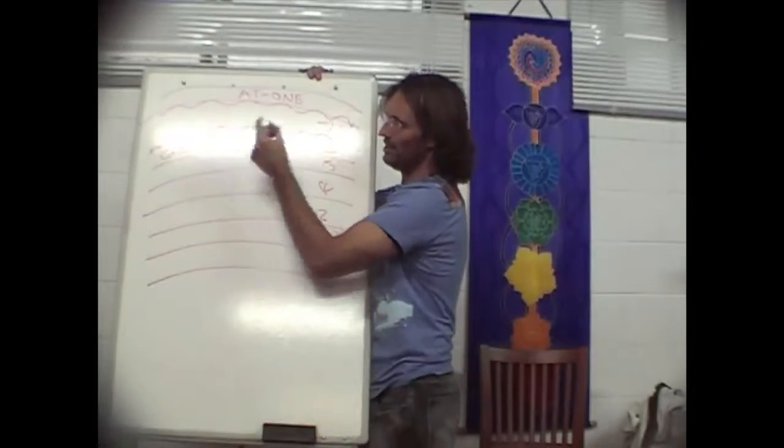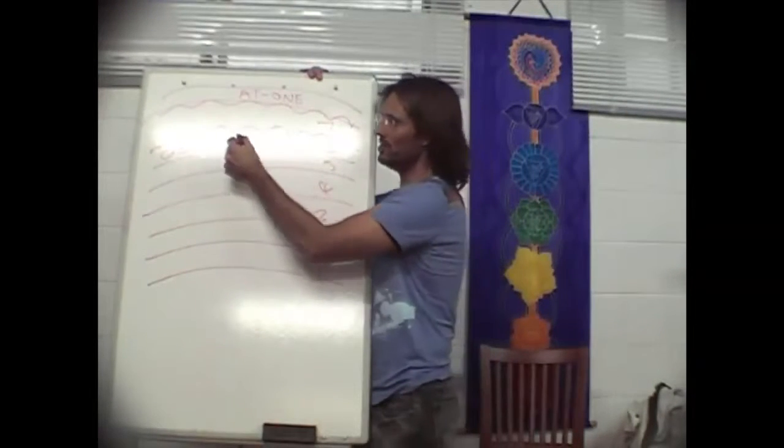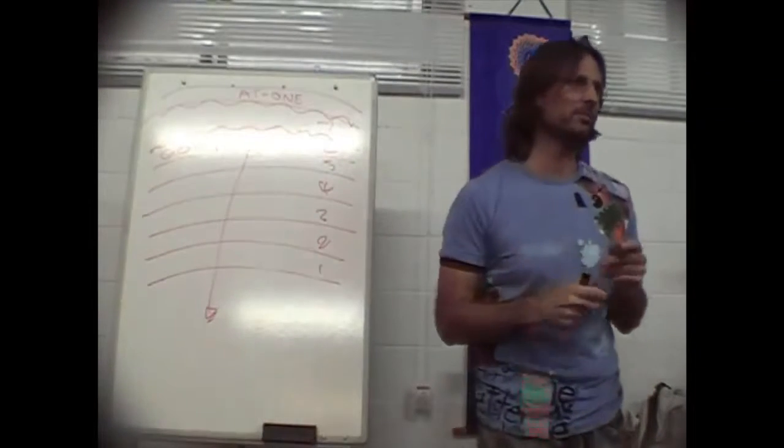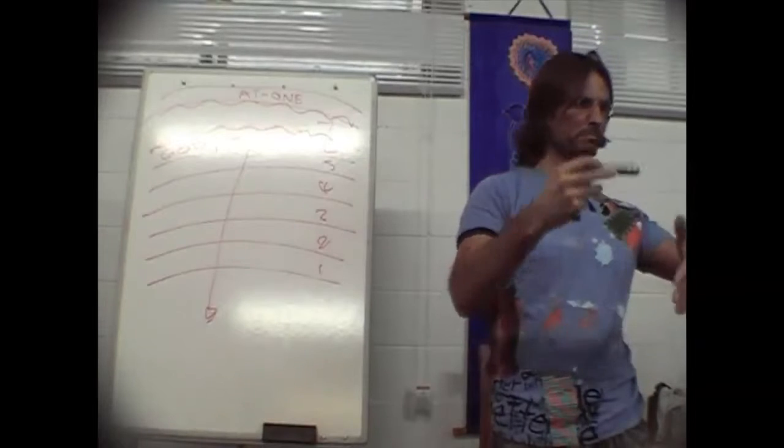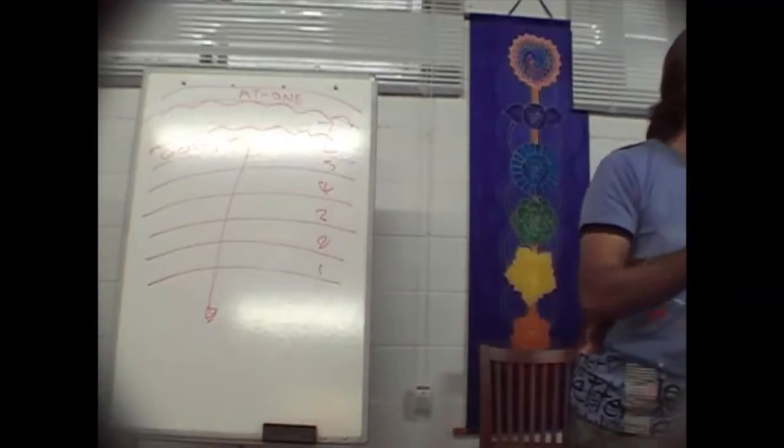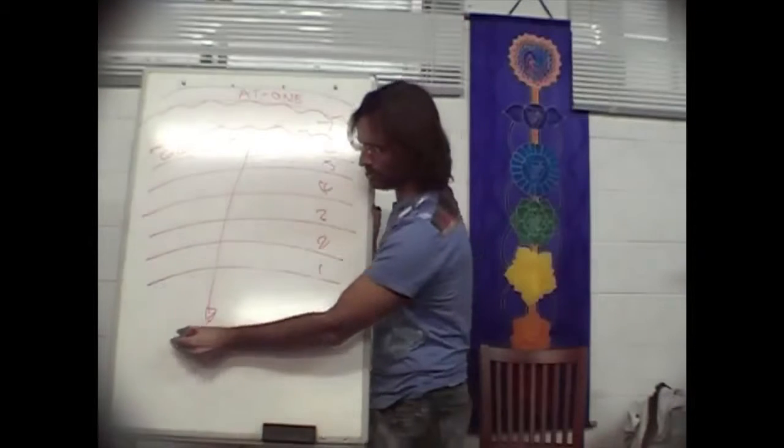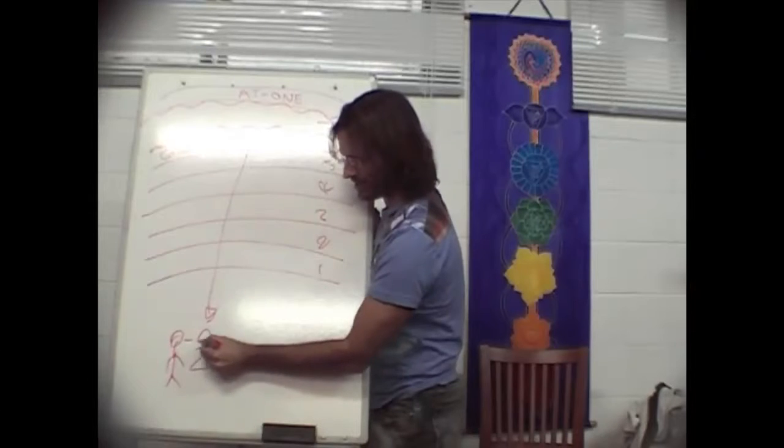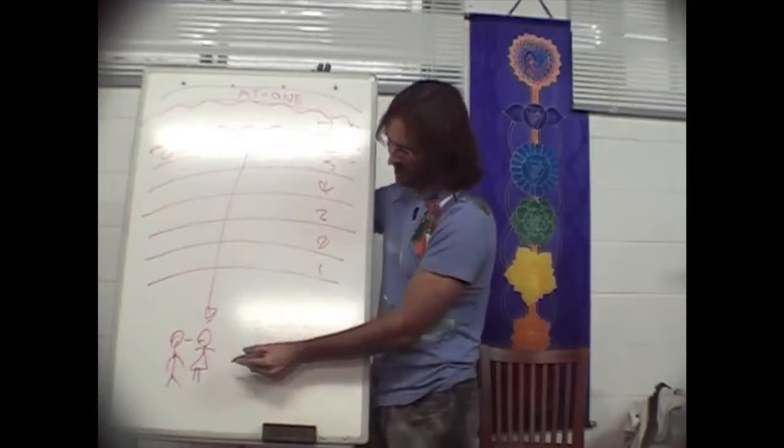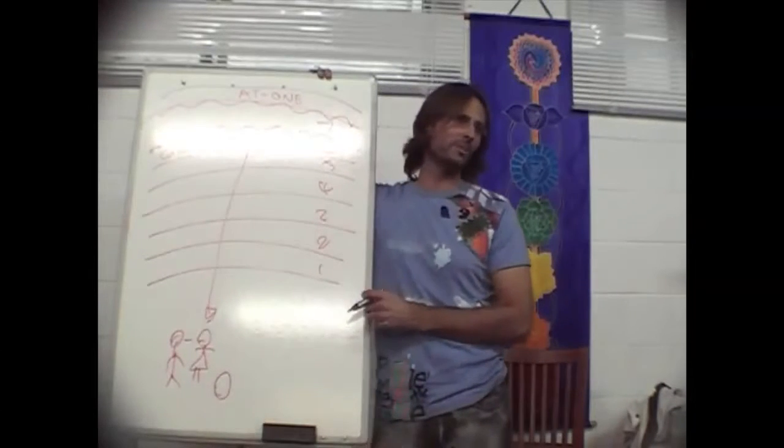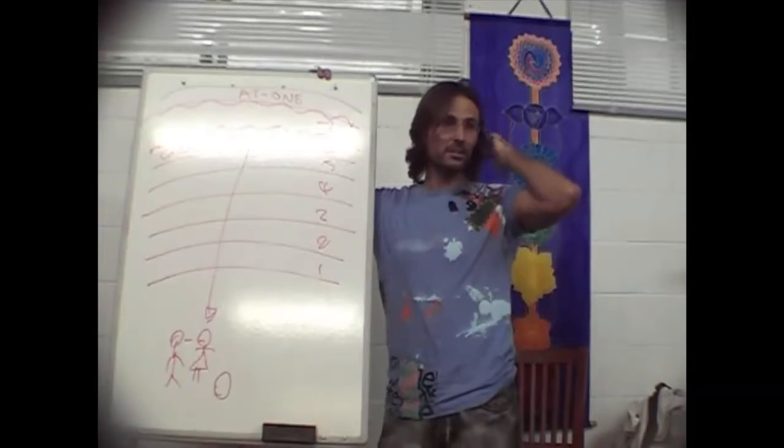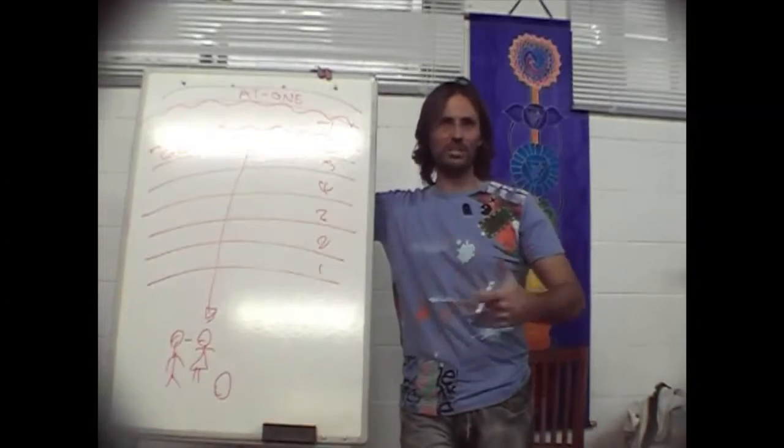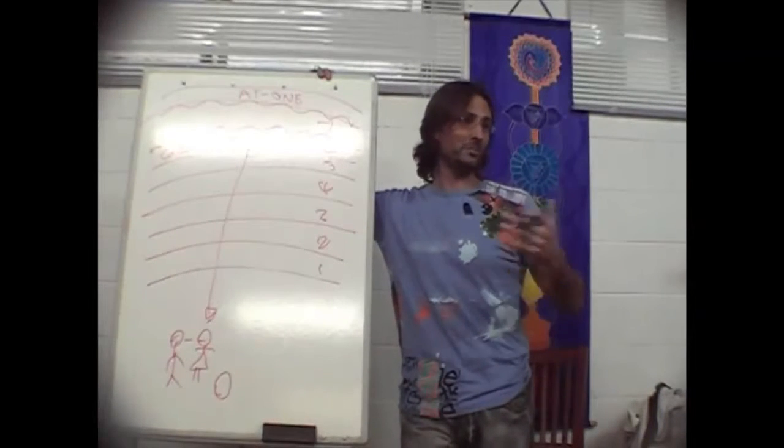The avatars - what happens is many spirits in this condition here look at the earth and they're very interested in helping the earth, very interested in helping people on earth be in a higher state of love. So what they do is they choose some parents who they feel are quite connected with God, who are going to have a child that's going to be quite mediumistic.